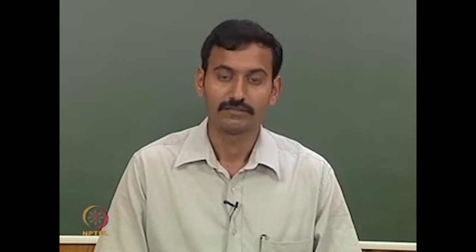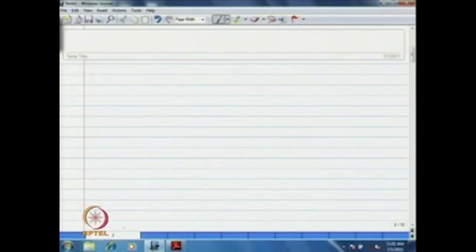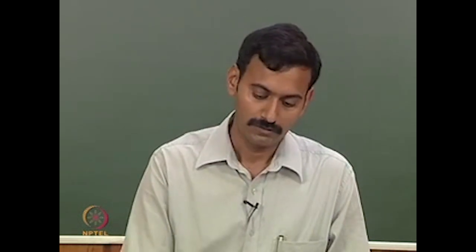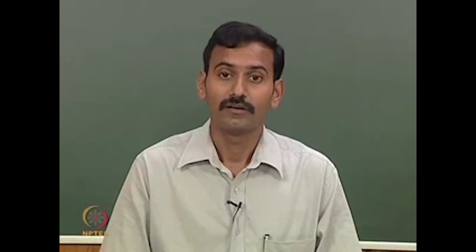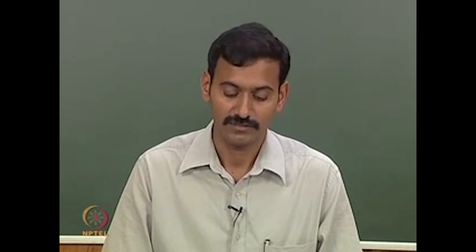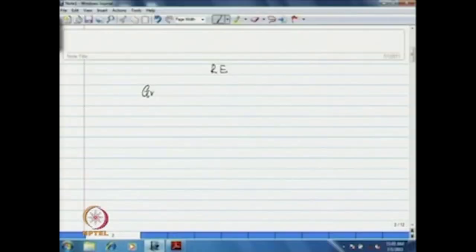Let us first see what is the present situation with this course. So far we have introduced the following. First, we introduced the notion of formal languages and then we looked for finite representation. In that context, we introduced the notion called regular expressions and the respective languages called regular languages. After introducing regular languages, given a language, whether it is regular or not is not easy to understand. We understood that point because giving a regular expression is not that easy. So in that context, we took the help of grammars and we specialized the two, called right linear grammars that we are calling regular grammars.